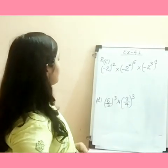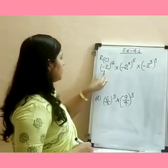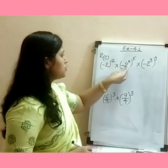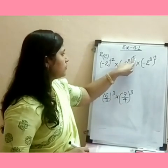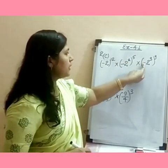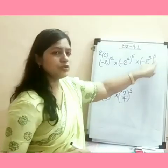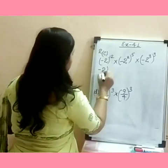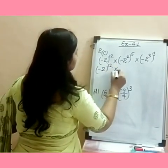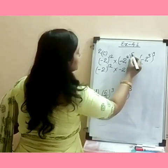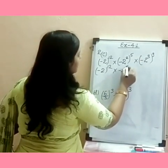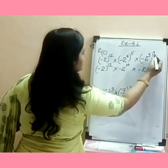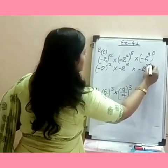Exercise 4.1, Question 2c: We have (−2) raised to the power 12, (−2) raised to the power 2 all to the power 5, and (−2) raised to the power 3 all to the power 9. Using the power-of-power rule, (−2)^(2×5) = (−2)^10 and (−2)^(3×9) = (−2)^27.